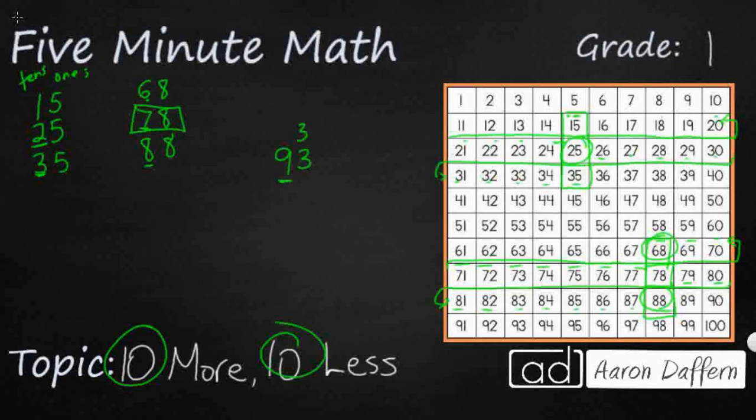Look what I did all these other times. When I wanted to do 10 less, I just made the ones digit the same and the tens digit one less. So I'm going to keep my three the same. I'm going to change my tens digit from nine to eight. So 83 is 10 less than 93.